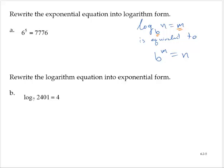So I would rewrite 6 to the fifth equals 7,776 in exponential form. Log base 6 of 7,776 is equal to 5.